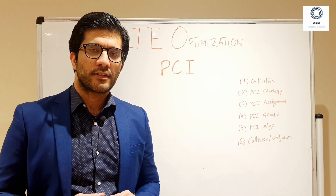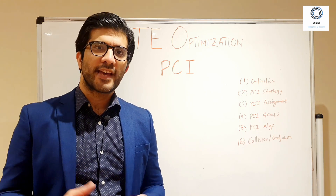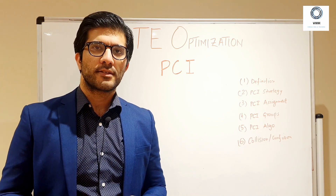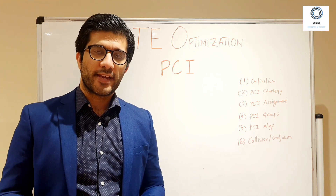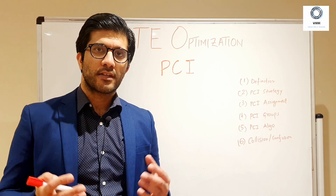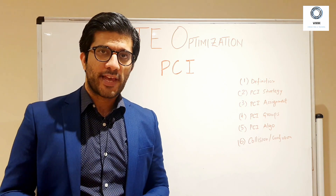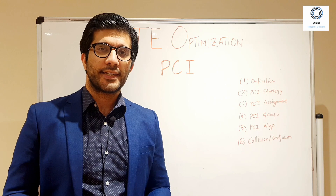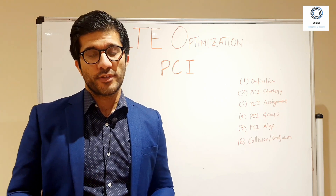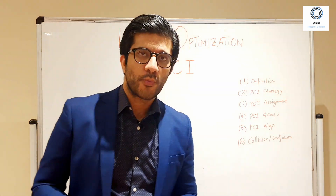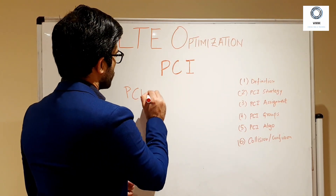Today's topic is again LTE optimization, and the particular topic I have chosen is PCI — that is your Physical Cell Identity. PCI is a very important part in LTE in terms of retainability and accessibility KPIs. Today we will see what PCI actually is, what the strategies of PCI planning are, how PCI can affect your KPIs, and what we can do to avoid any issues with PCI.